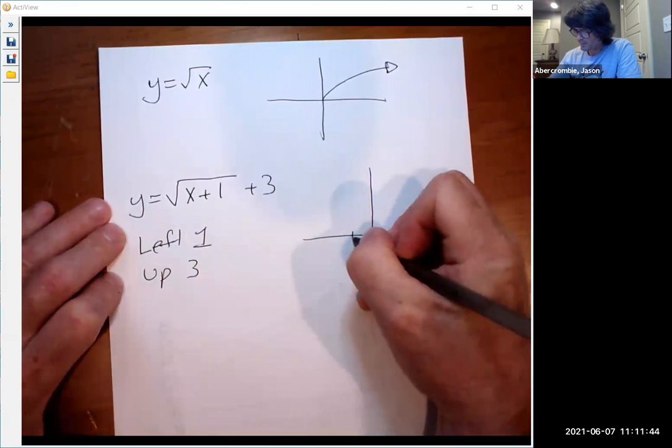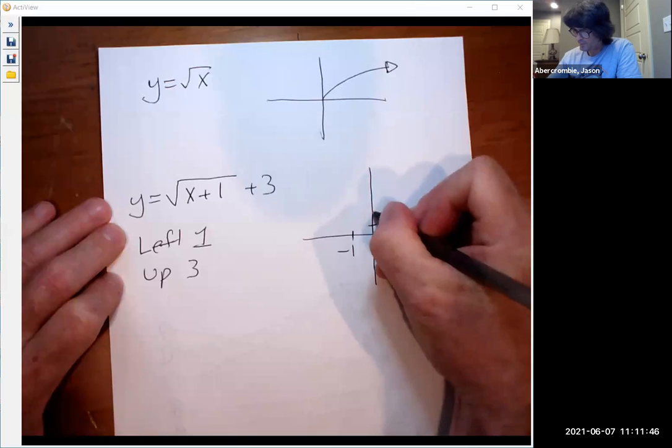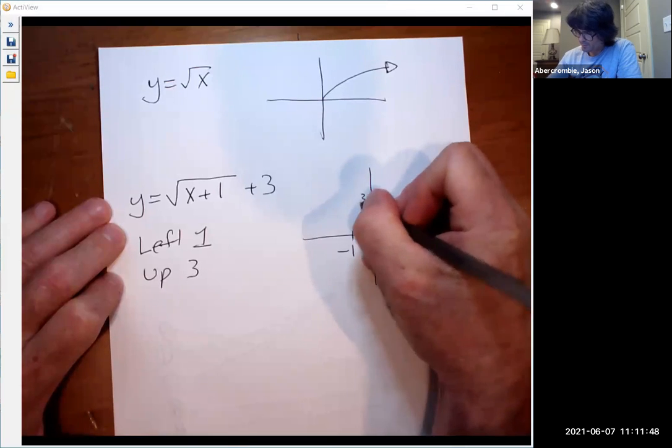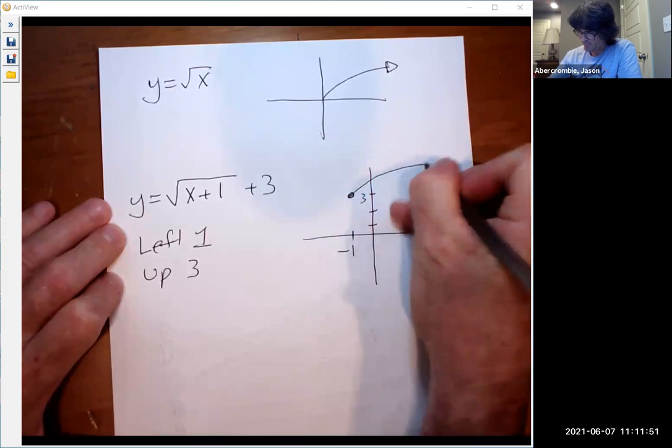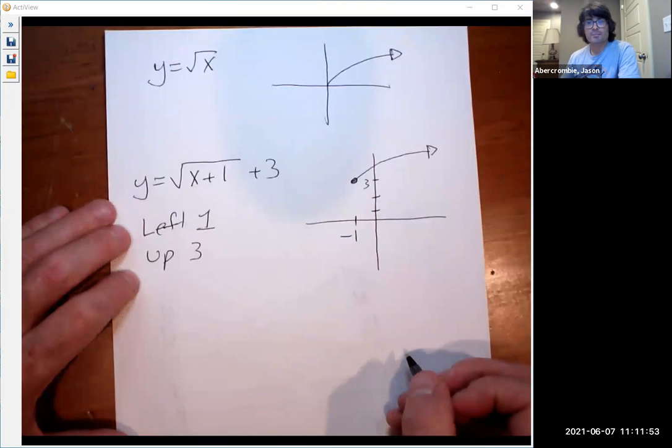Left to negative 1, up 1, 2, 3. And your new graph is going to start right there. It's going to be the exact same curve, just starting in a new spot.